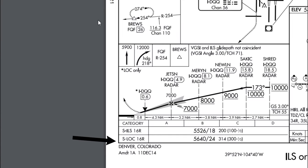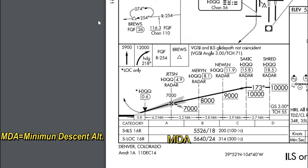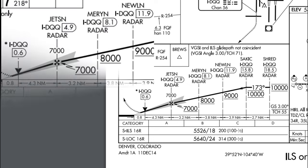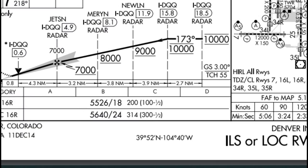Below that we look at the localizer approach minimums. The first number is 5,640, followed by a forward slash and 24, with 314 next to that. The 5,640 is the minimum descent altitude — we cannot descend below that altitude if we do not meet the RVR minimum of 2,400 feet. The 314 is the HAT, which stands for height above touchdown.